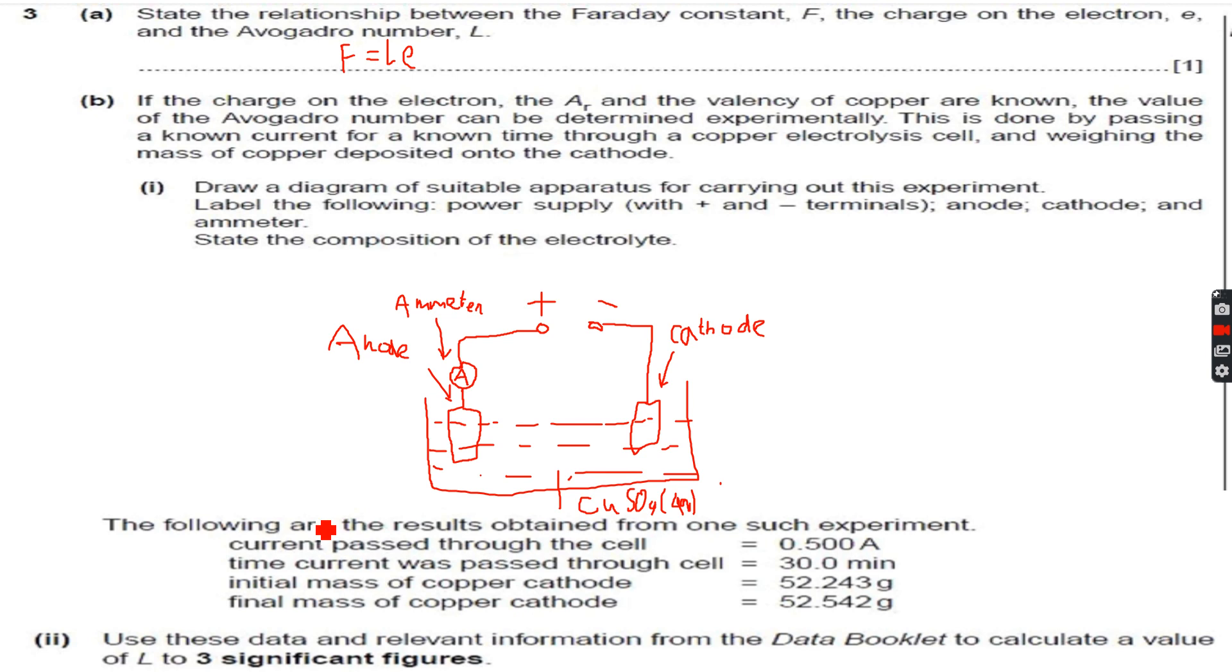Use these data and relevant information from the data booklet to calculate a value of L to three significant figures. Now what is known is the charge on an electron, the Ar, and the valency of copper. These are the only things known. This means that we cannot use the value of the Faraday constant, because otherwise they would have stated that F is also known.